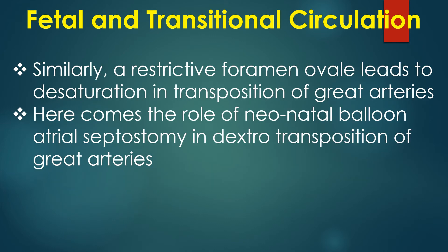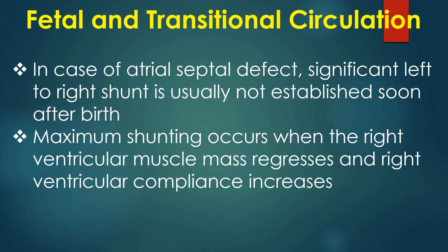Similarly, a restrictive foramen ovale leads to desaturation in transposition of the great arteries. This highlights the role of neonatal balloon atrial septostomy in dextro-transposition of the great arteries. In the case of atrial septal defect, significant left-to-right shunt is usually not established soon after birth. Maximum shunting occurs when the right ventricular mass regresses and right ventricular compliance increases.